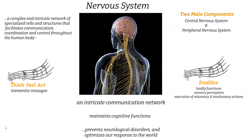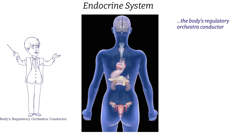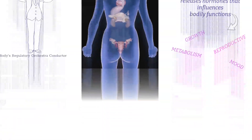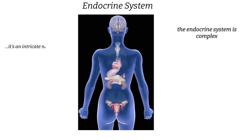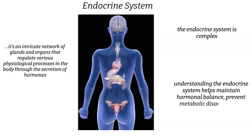Then there's the endocrine system — like the body's regulatory orchestra conductor. It releases hormones that influence various bodily functions, acting as chemical messengers traveling through the bloodstream to target cells and organs, exerting control over growth, metabolism, reproduction, mood, and numerous other functions. The endocrine system works in conjunction with the nervous system to maintain homeostasis. Understanding it helps maintain hormonal balance, prevent metabolic disorders, and regulate mood and growth.